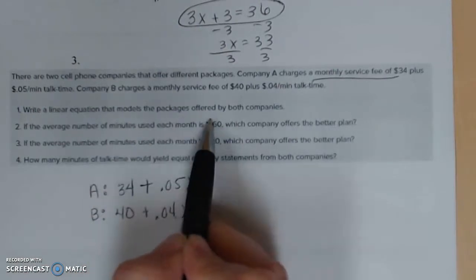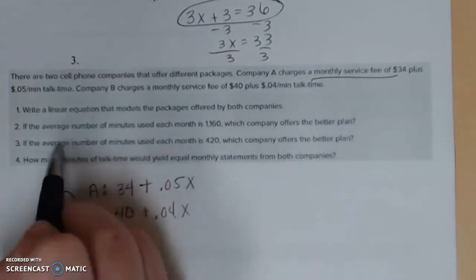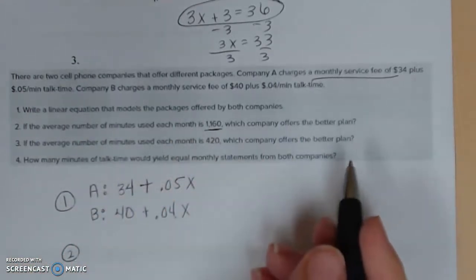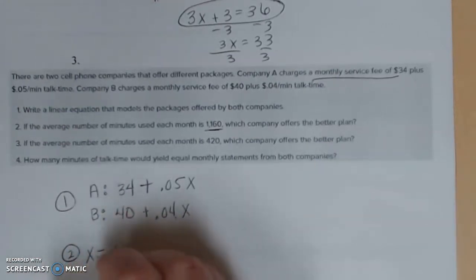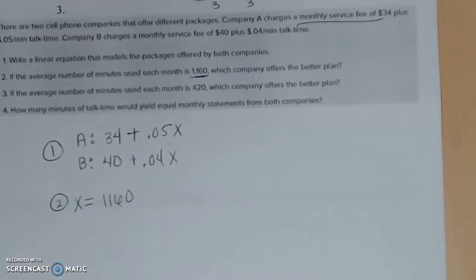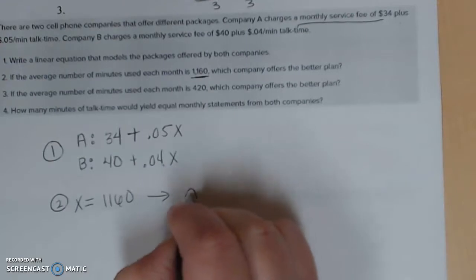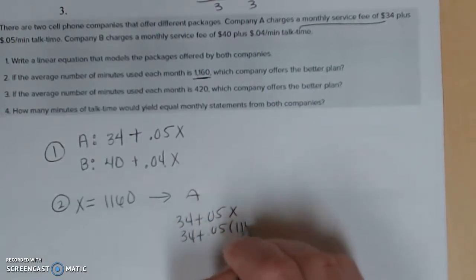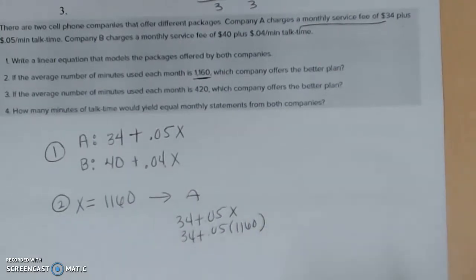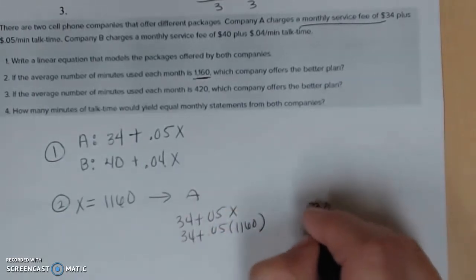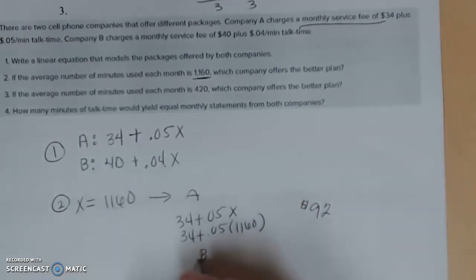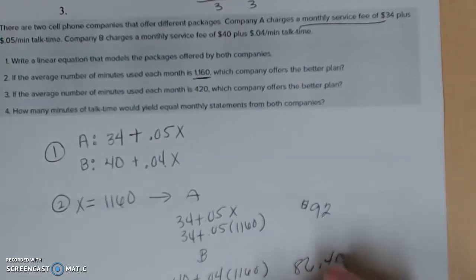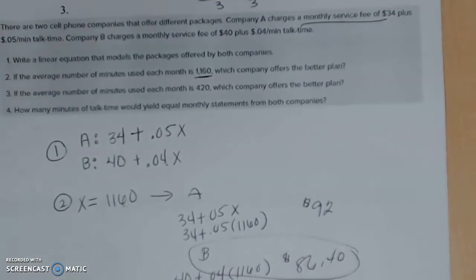Write a linear equation that models the packages offered by both companies, part one. Number two, if the average number of minutes used each month is 1160, which company offers the better plan? That means if X is equal to 1160 minutes, which one is the better plan? Or the cheaper plan? So what you're going to do is you're going to take company A, you're just going to take your handy dandy equation here, plug in the amount of minutes they gave you. Calculate that out. So let's do 34 plus 0.05 times 1160 and you should get $92. Do it again for company B. So we're looking at 40 plus 0.04 times that 1160 and you should get $86.40. So who has the better deal? Company B does. It's going to save us about $6.